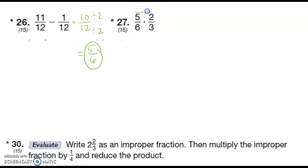Here I'm going to multiply across the top and multiply across the bottom. Five times two is ten, six times three is eighteen. We're going to divide the top and the bottom by two. Ten divided by two is five, eighteen divided by two is nine.